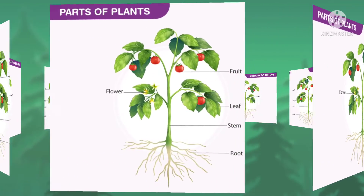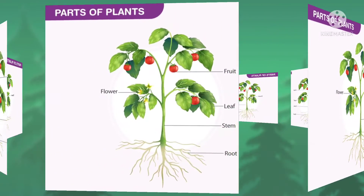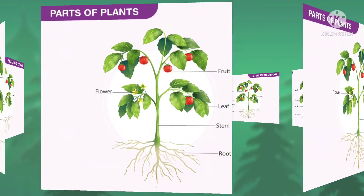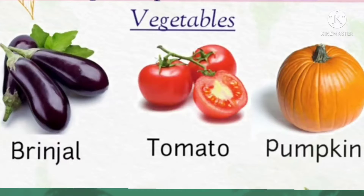Today we are going to read about edible parts of plants. This means how we consume or eat different parts of plants. Dear children, we eat fruits like bananas, apples, mangoes and vegetables like brinjal, tomato, pumpkin — all are parts of a plant. We get fruits and vegetables from plants.